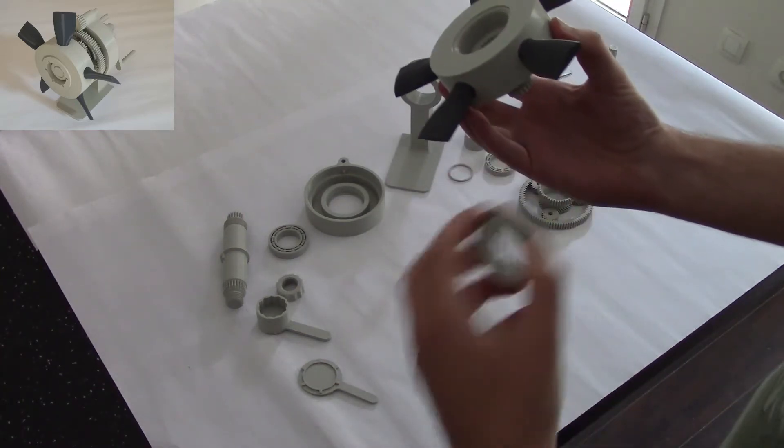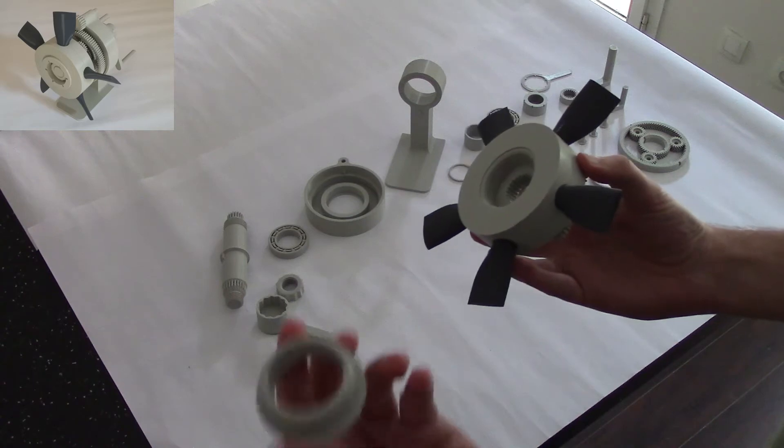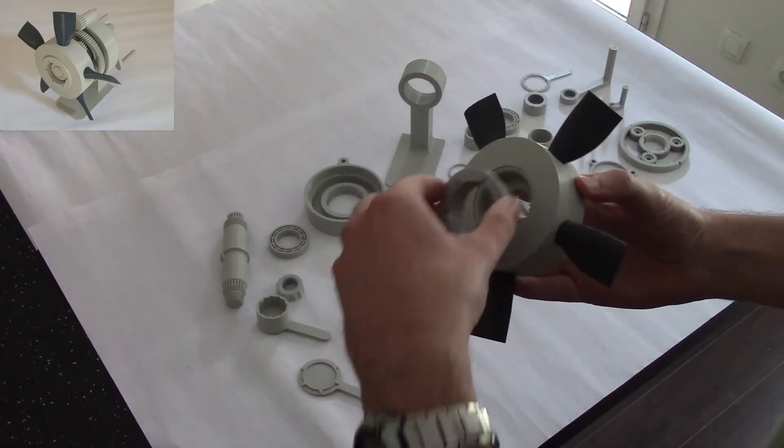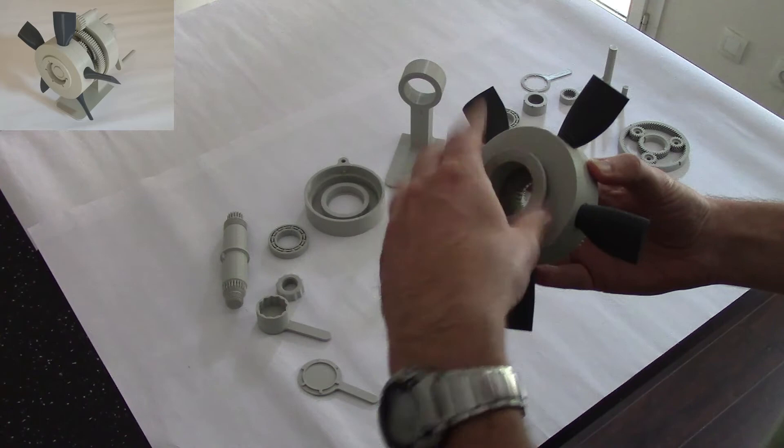When the pieces touch, then it's in place. You can take the hub screw and screw it in the front.